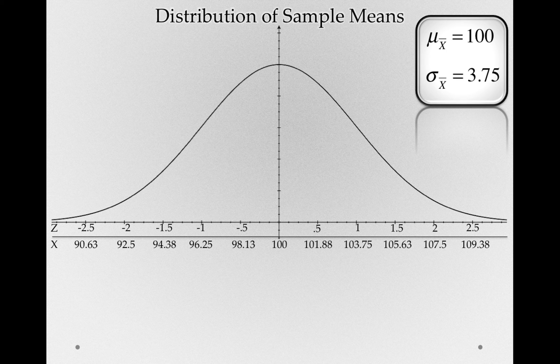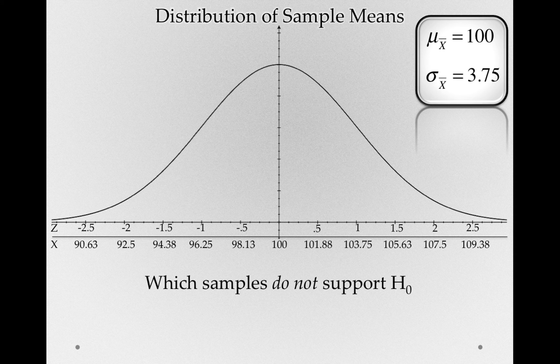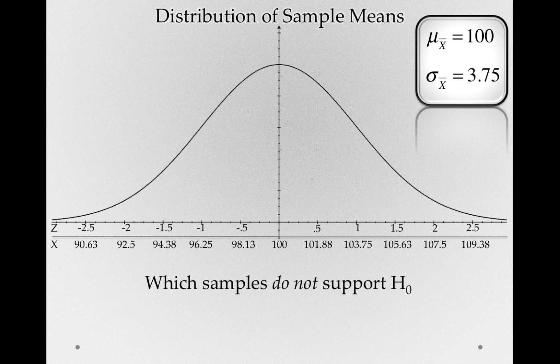But the question is, where do we punctuate this distribution? Where do we say samples do not support the null hypothesis?